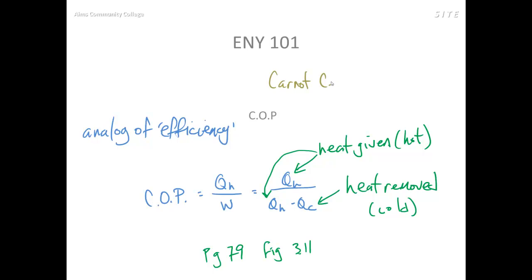So a Carnot COP would be T sub H over T sub H minus T sub C and again there is that caveat. Please take some time and look at the text in the 3 minute module document.